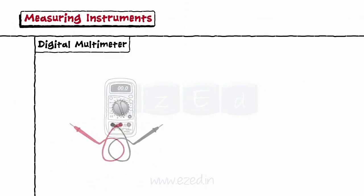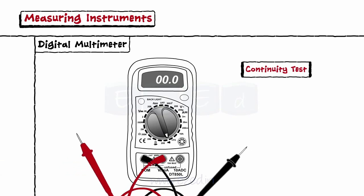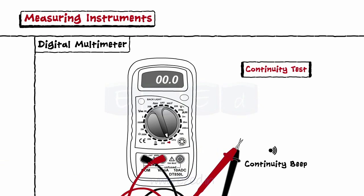To ensure the working of a DMM, a test known as continuity test is carried out. In this test, when we connect the red and negative probes of the DMM to each other, the circuit gets complete, and the DMM beeps to ensure the continuity.